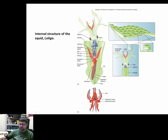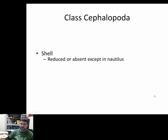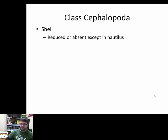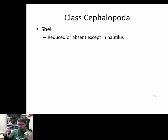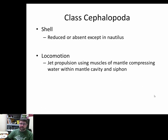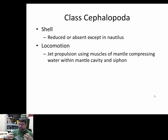These features — the true kidney, digestive cecum — are things we haven't really seen up to this point, making cephalopods much more advanced. The shell in the class Cephalopoda is normally very reduced or absent, except in nautilus which has an external shell. In cuttlefish, octopus, and squid, the shell is either internal and very reduced or completely absent. Locomotion is done through jet propulsion.